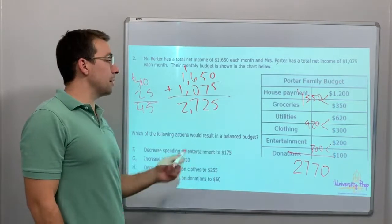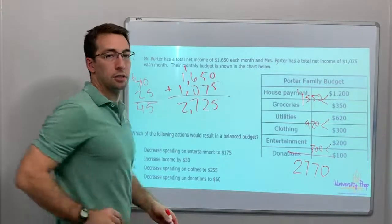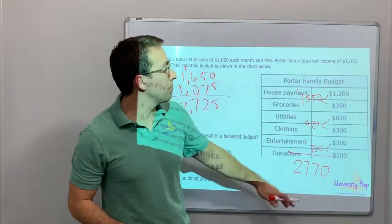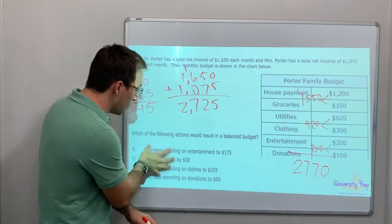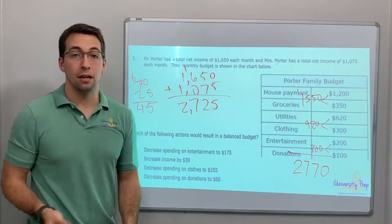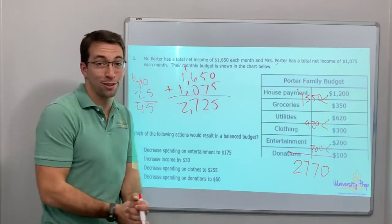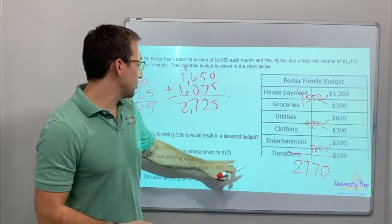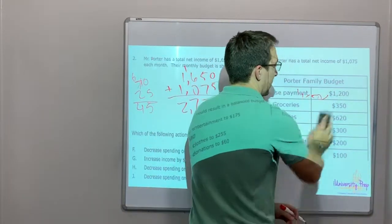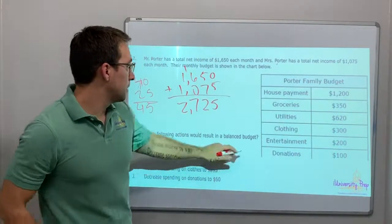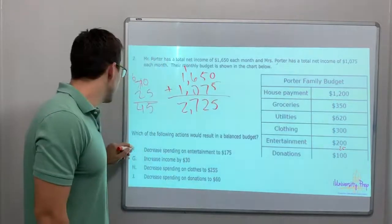Decrease spending on entertainment? Do you guys see how much work I already did? I added up their income, then I added up the budget expenses, and then you subtract. You find the difference – the difference is $45. And I haven't even read the answer choices yet. You have to do lots of scratch work on your STAR test. Decrease spending on entertainment to $175? That's $25. No, we need $45.